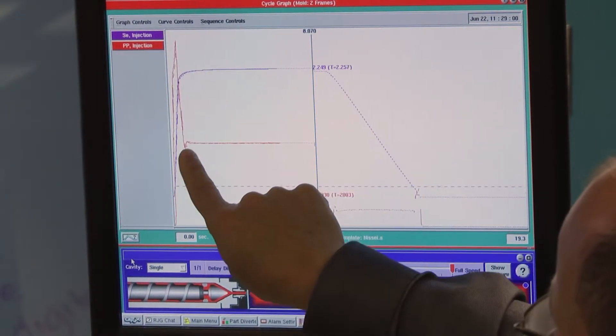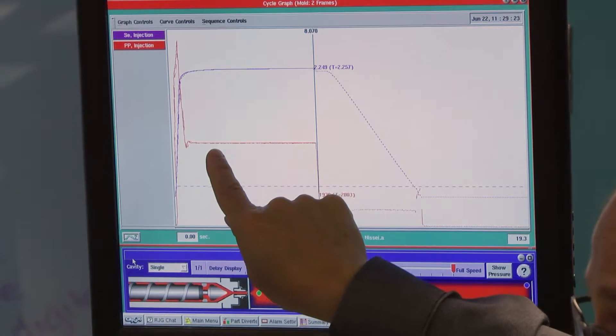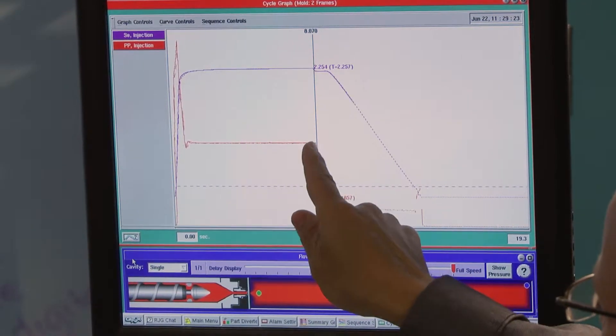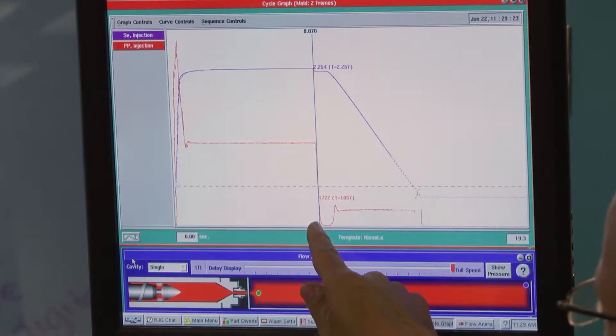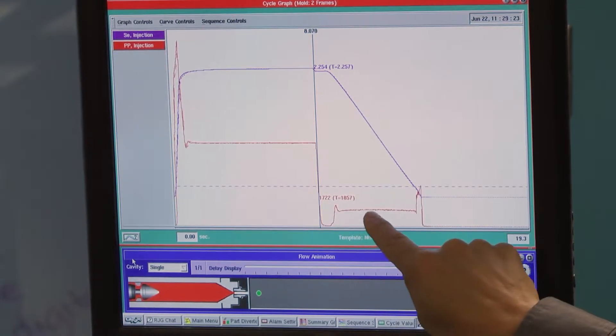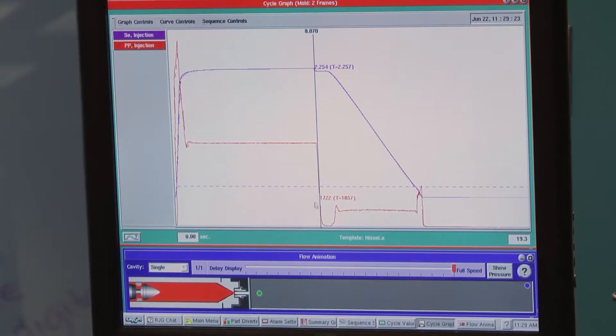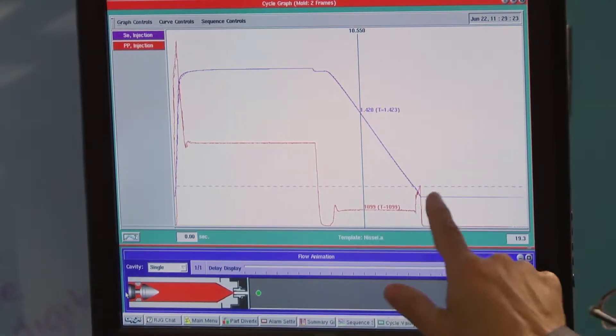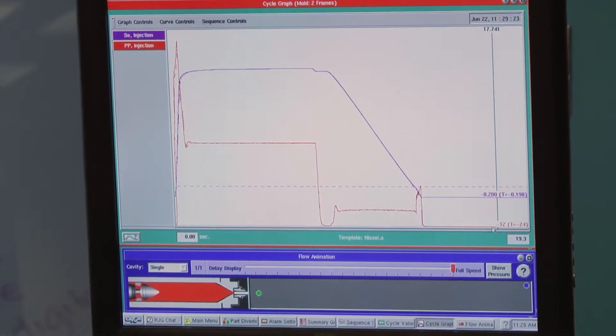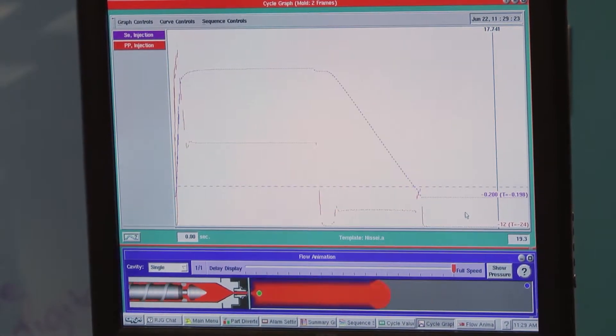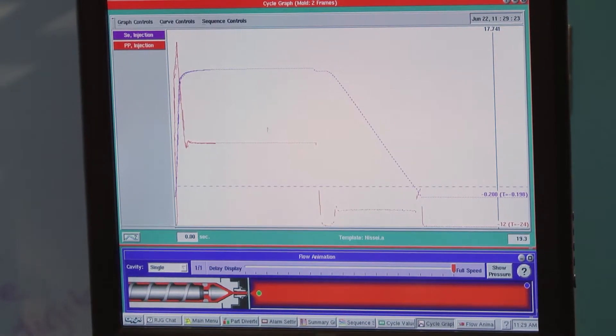At transfer we go into second stage or hold pressure. At the end of injection forward we go into screw recovery. We can see the back pressure, and at the end of the cycle there's nothing happening with either the screw position or the injection pressure.